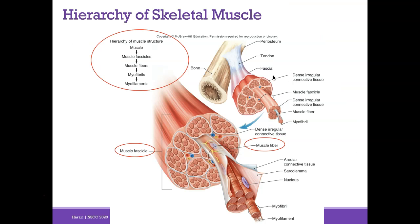There's a hierarchy that gets a little complicated, so it's helpful to write it down. A muscle is broken down into fascicles, which are bundles of muscle fibers. Muscle fibers can also be broken down — within a muscle fiber we have myofibrils, which are bundles of myofilaments. Make sure you keep that hierarchy in check.